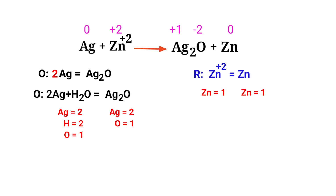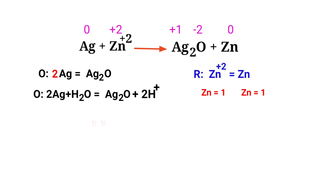To balance the oxygen atoms, add H⁺ ions. The oxygen atoms are now balanced. Then balance the hydrogen atoms by producing H⁺ ions. The number of atoms are now balanced in the oxidation half reaction.